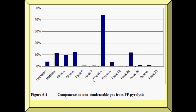Here are the components in non-condensable gas for polypropylene: hydrogen, methane, ethylene, ethane, propane — which has the highest percentage — and butane.